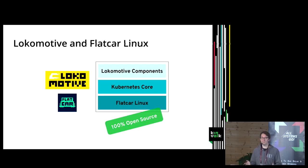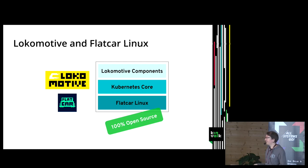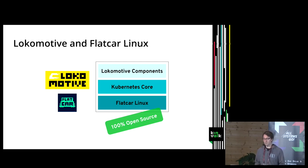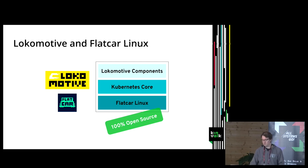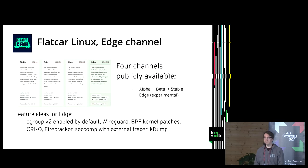I will talk about the context of why those tools exist. At Kinfolk we have a stack with a Linux distribution called Flatcar Linux, which is an OS optimized for containers. On top of that we have Lokomotive, which is a Kubernetes distribution. Inspector Gadget sits on top of that and offers more high-level tools for Kubernetes developers. All of this is open-source, and on Flatcar Linux we have different channels for release.